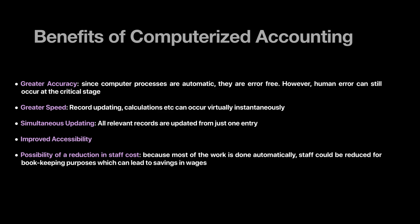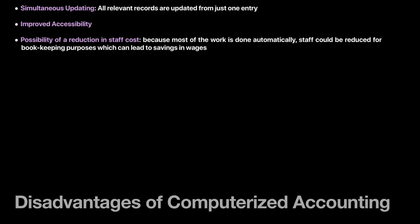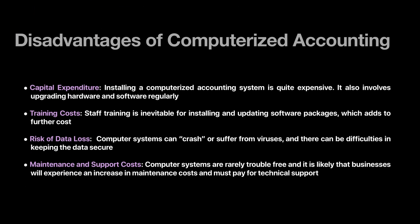All ledgers, trial balance, income statement, statement of financial position, and cash flows are updated instantly. Computerized accounting also improves accessibility, and there is a possibility of reduction in staff costs because work is done automatically. The amount of staff previously required would go down, resulting in savings in wages as well.